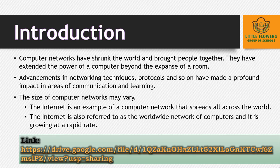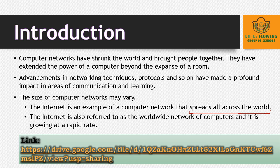The size of a computer network may vary. The internet is an example of a computer network that spreads all across the world. The internet is also referred to as a worldwide network of computers and it is growing at a rapid rate. It is a worldwide network of computers, growing at a rapid rate.